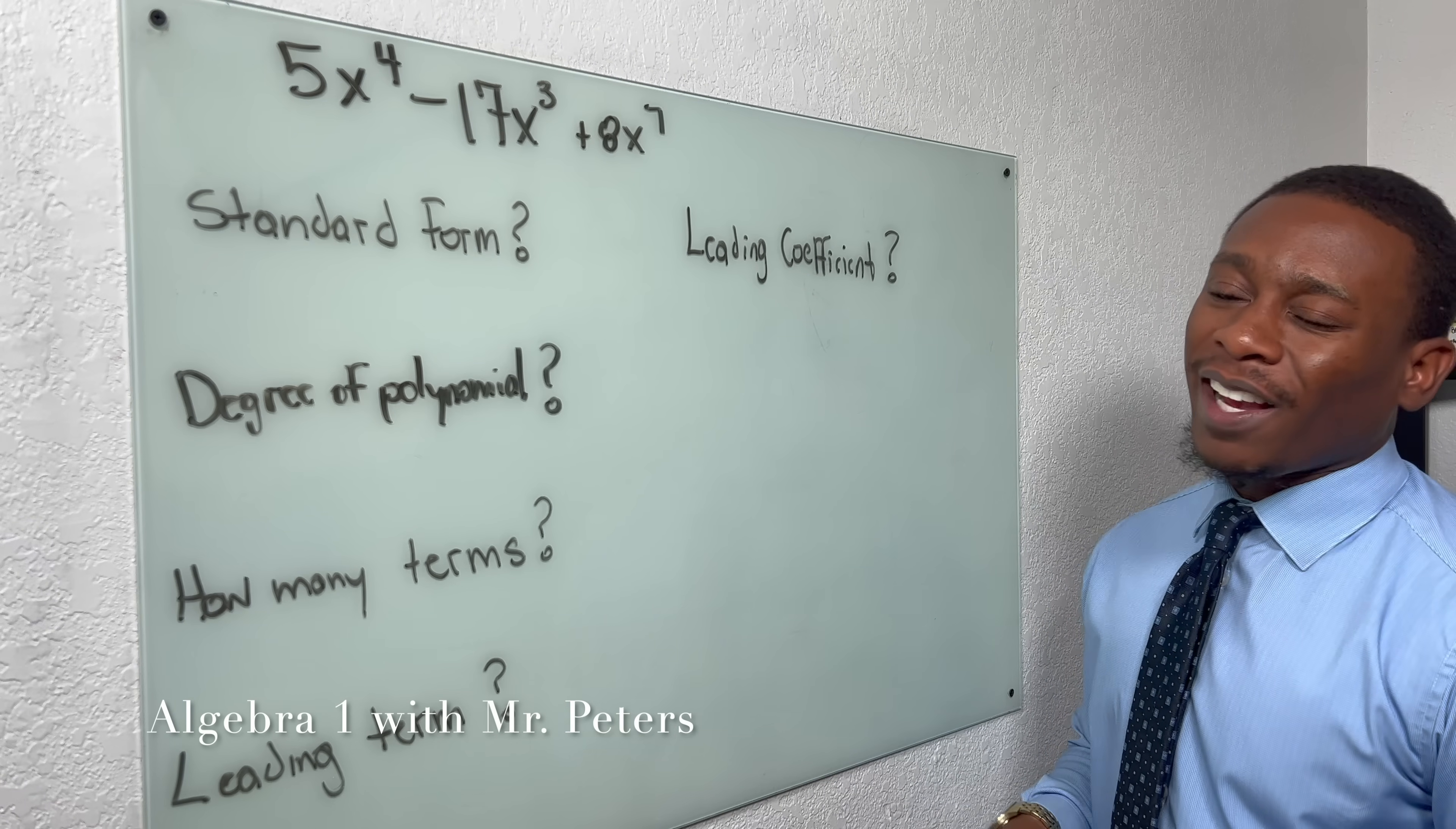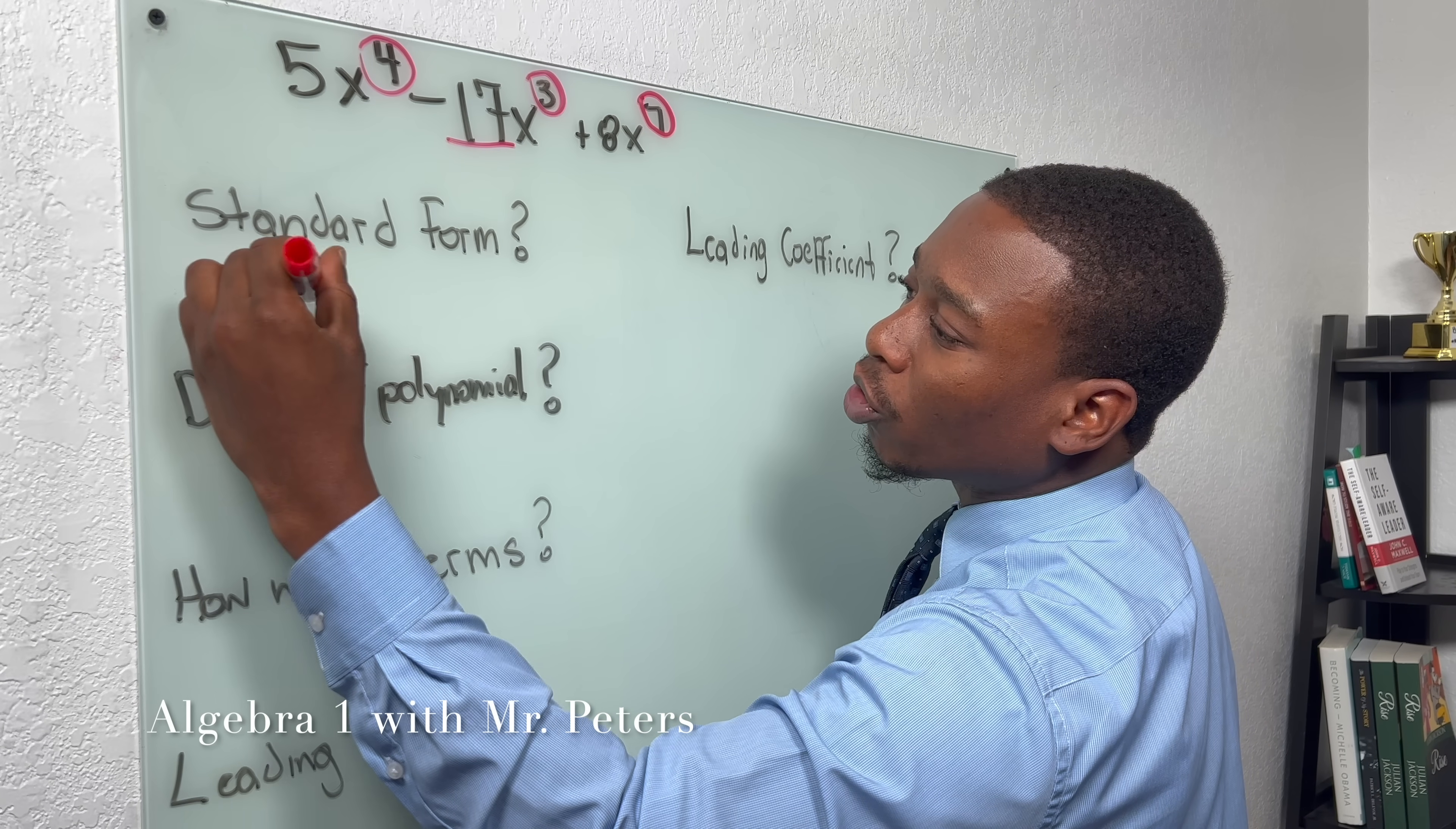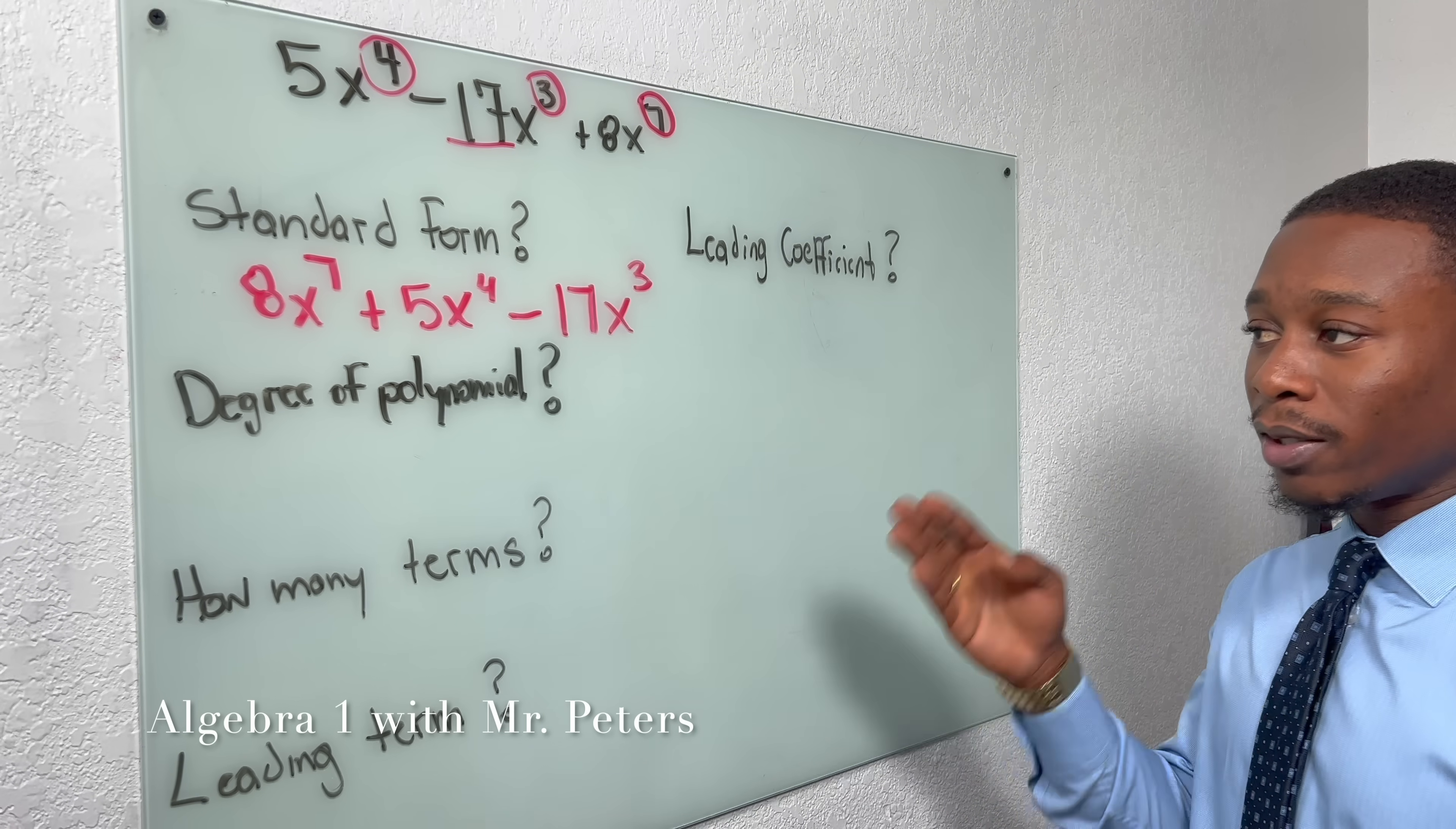So number one, they ask us to write this polynomial in standard form. Just remember, standard form starts with the highest exponent and goes down in order. It doesn't go by the constant, it goes by the exponent. So our answer for standard form will be 8x^7 + 5x^4 - 17x^3. And if you look at our exponents, we started from the greatest exponent, and we're going in order from greatest to least.